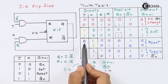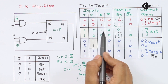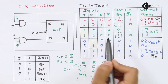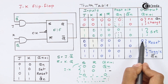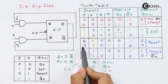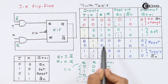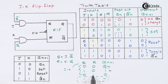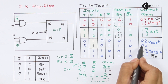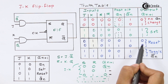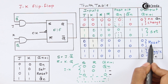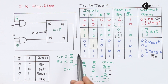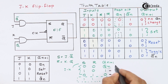Third, when J=0 and K=1: in the first sub-case, S=0 and R=0, so output equals QN which is 0. In the second sub-case, S=0 and R=1, which is the reset condition, so output remains 0. Both sub-cases give output 0, so this condition of JK flip-flop is called the reset condition.